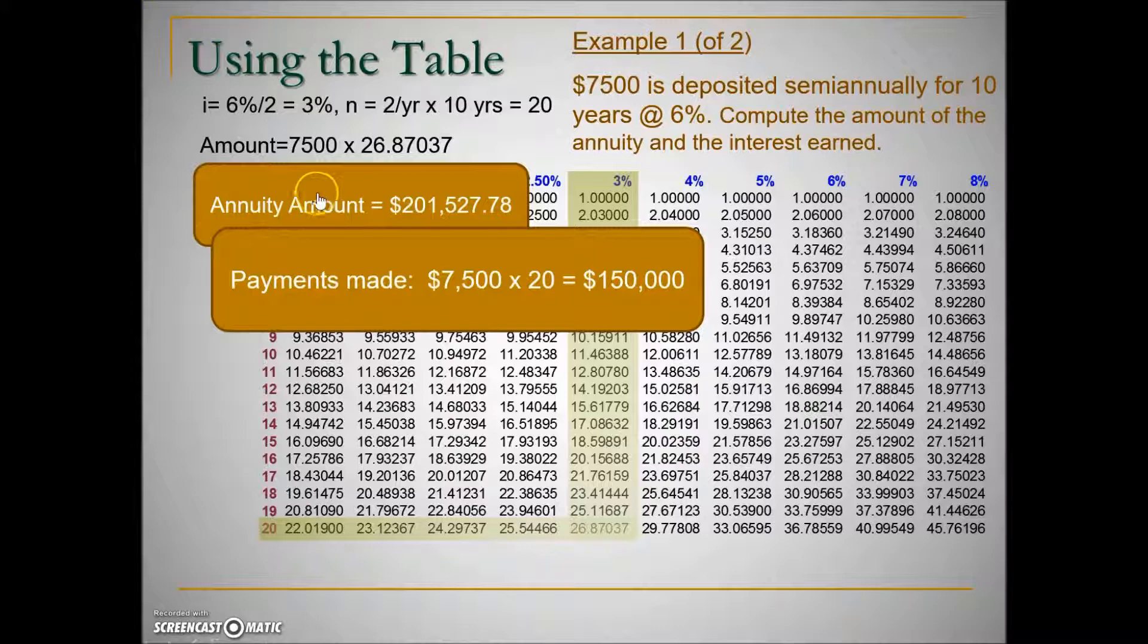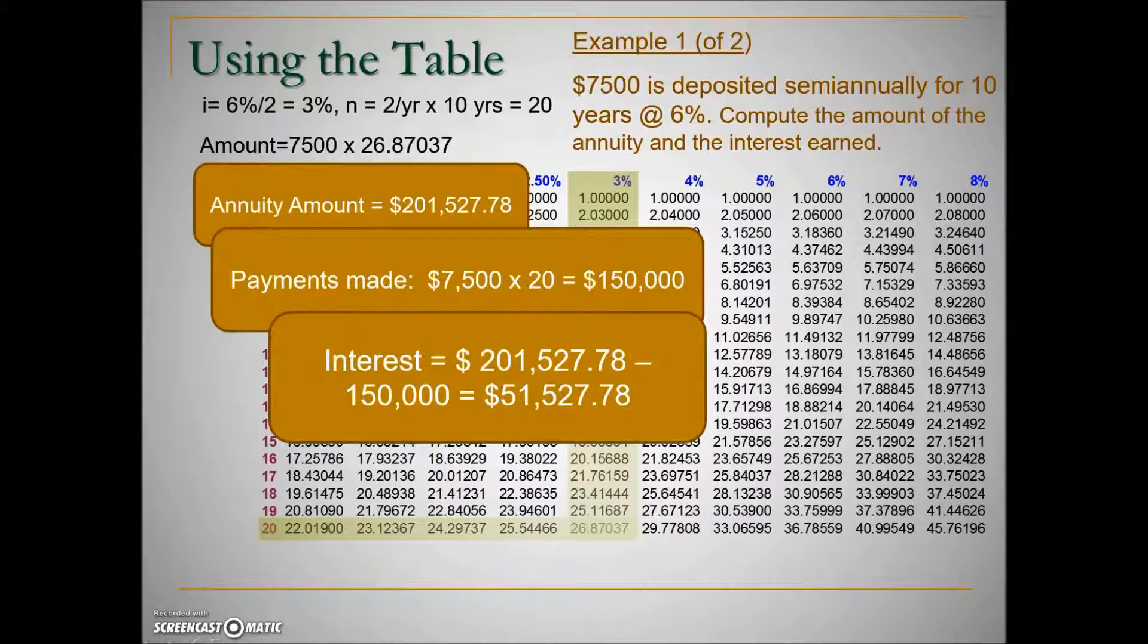This amounts to $150,000. The difference between the total value or the future value of the annuity less the amount that has been deposited in there will give us the earnings or the interest earned. So in this 10 years, this account has earned interest of over $51,000, almost $52,000.